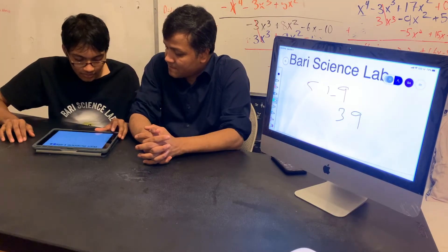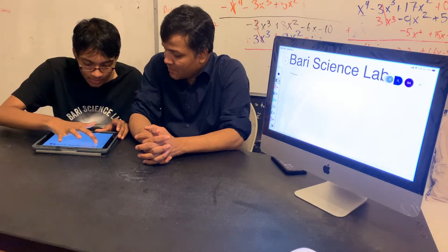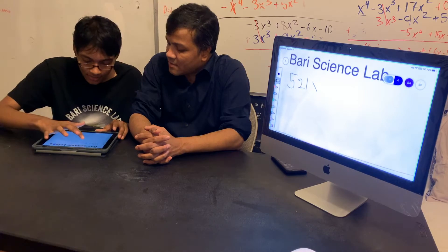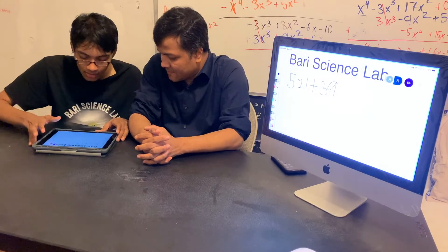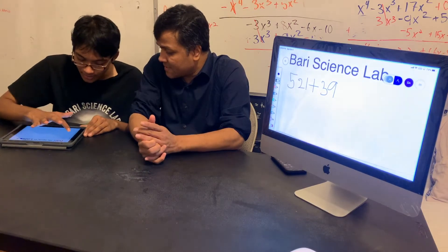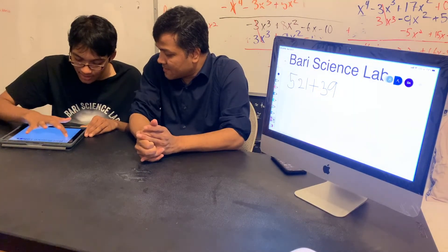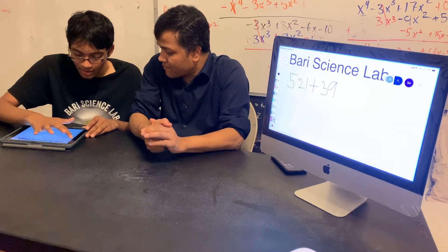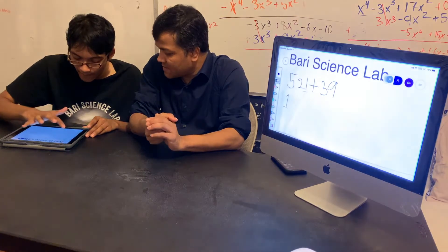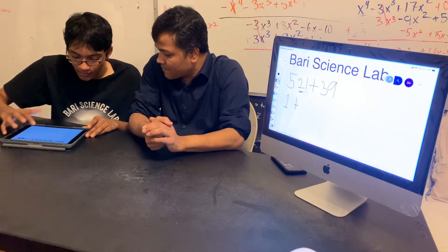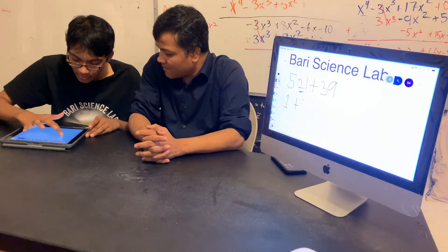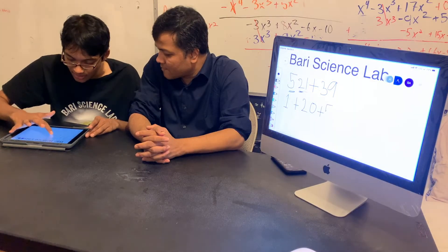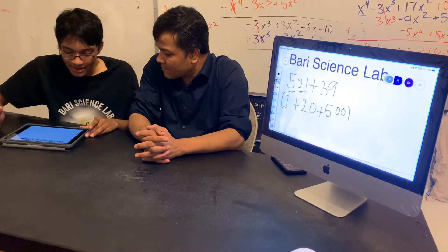So five hundred twenty-one — let's start with the one. This one you can just write as one. This two you can write as twenty — two groups of ten. This five you can write as five groups of hundred — five hundred. So that's it for five hundred twenty-one.